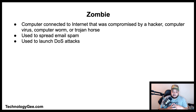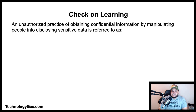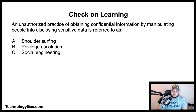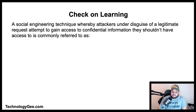Now let's do some check on learning. The first question: an unauthorized practice of obtaining confidential information by manipulating people into disclosing sensitive data is referred to as what — shoulder surfing, privilege escalation, social engineering, or penetration testing? The correct answer is social engineering.